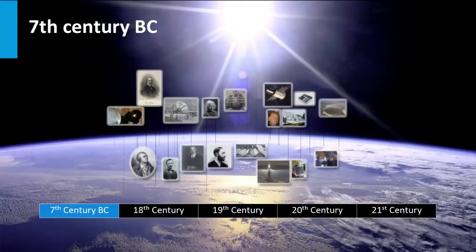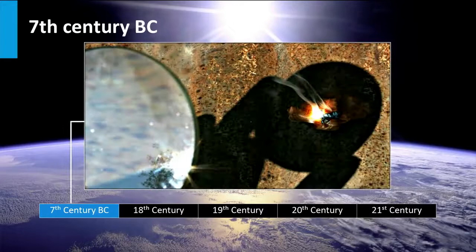As early as the 7th century before Christ, humans have used the first solar technology. They used magnifying glasses to make fire. Later, the Romans and Greeks used concentrating mirrors for the same purpose as well.